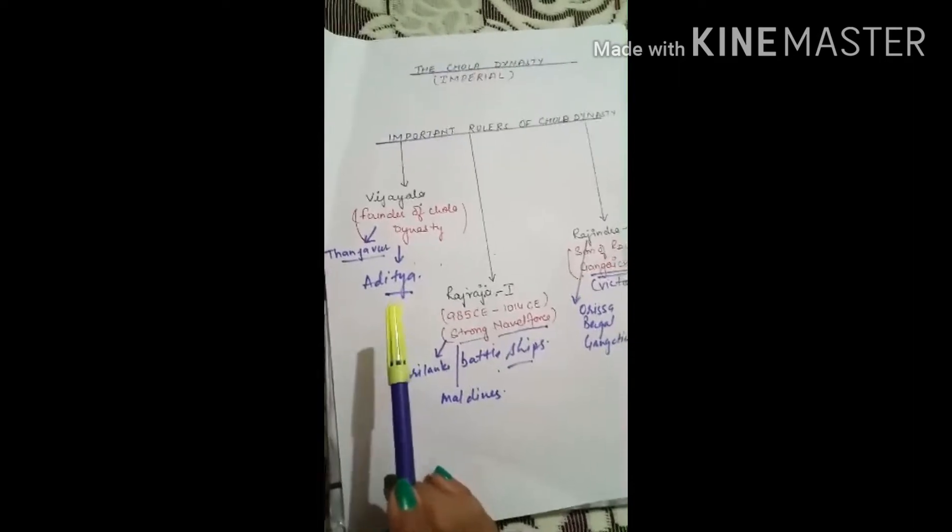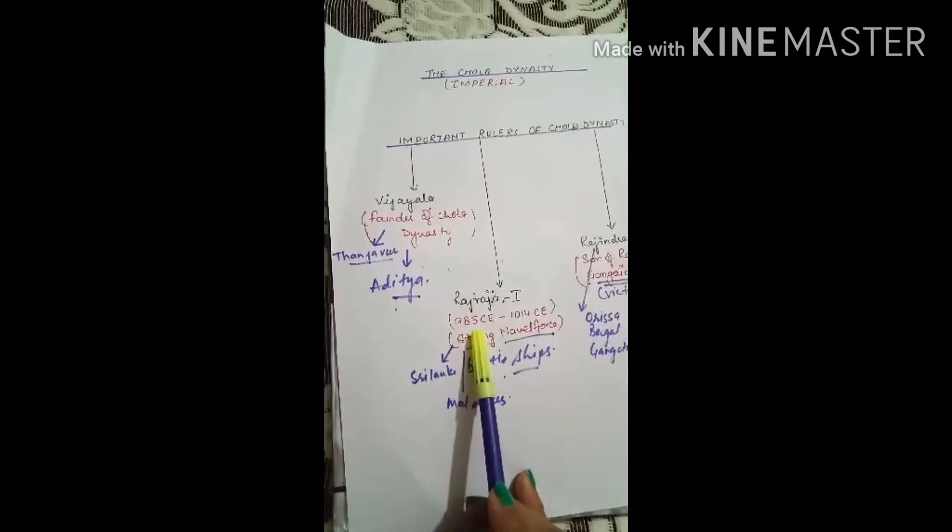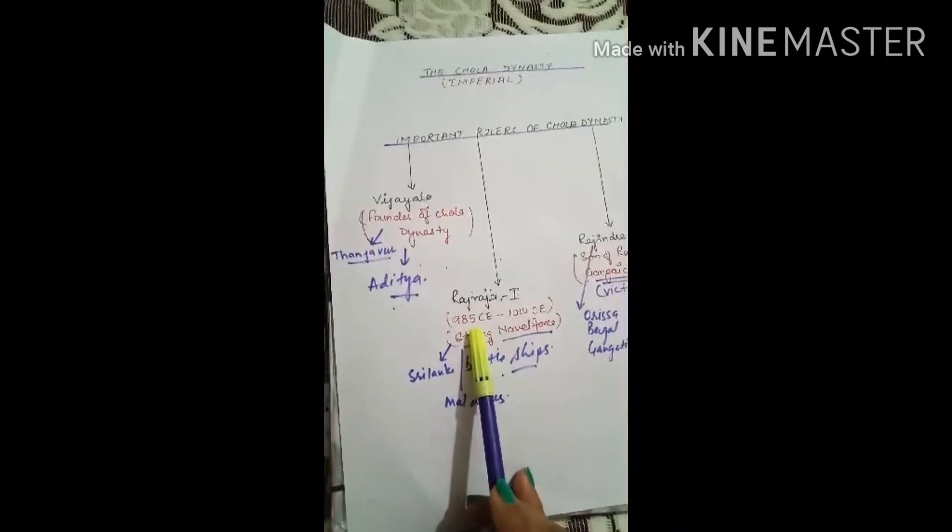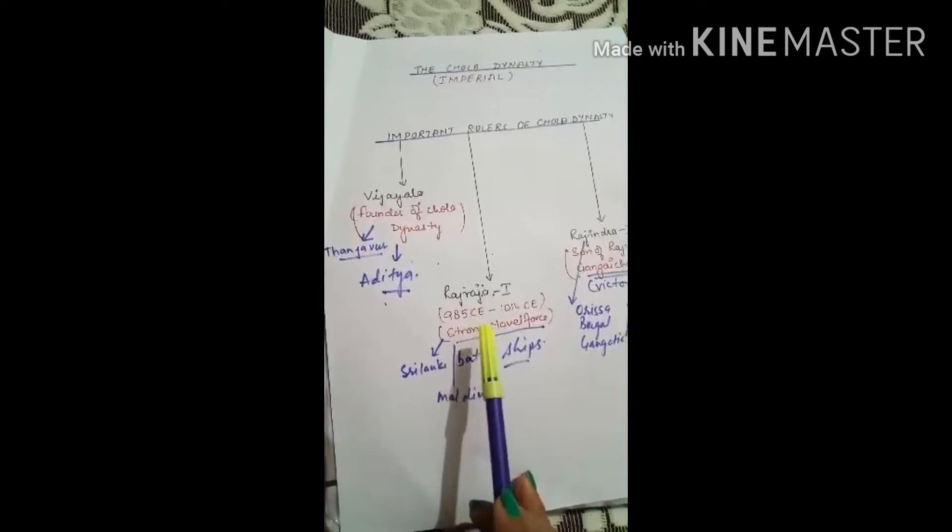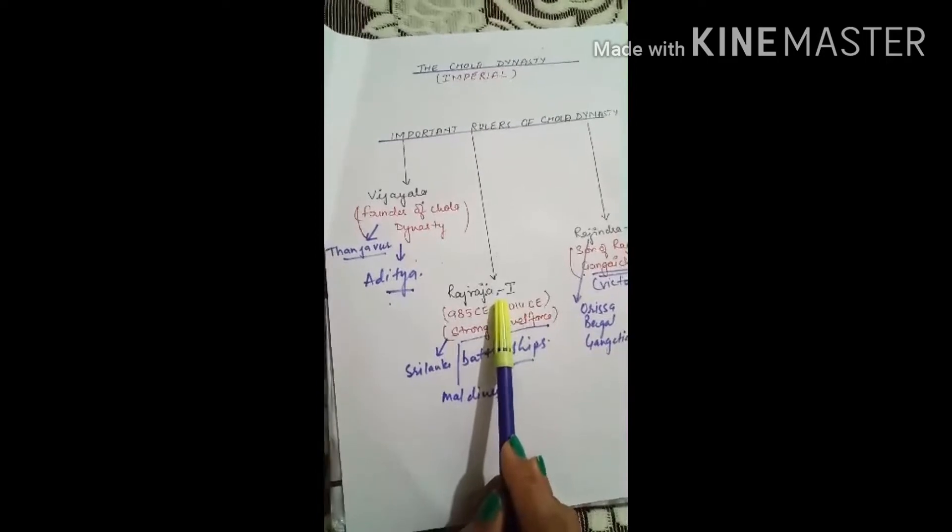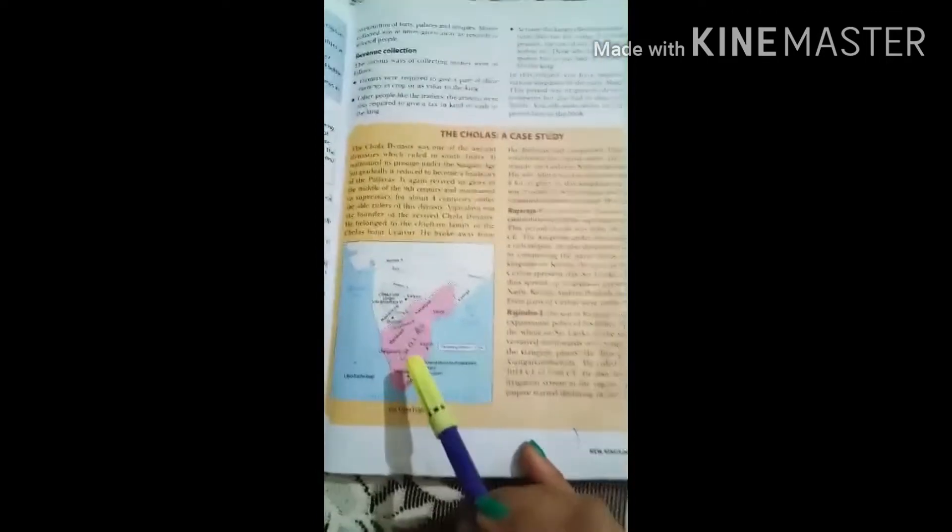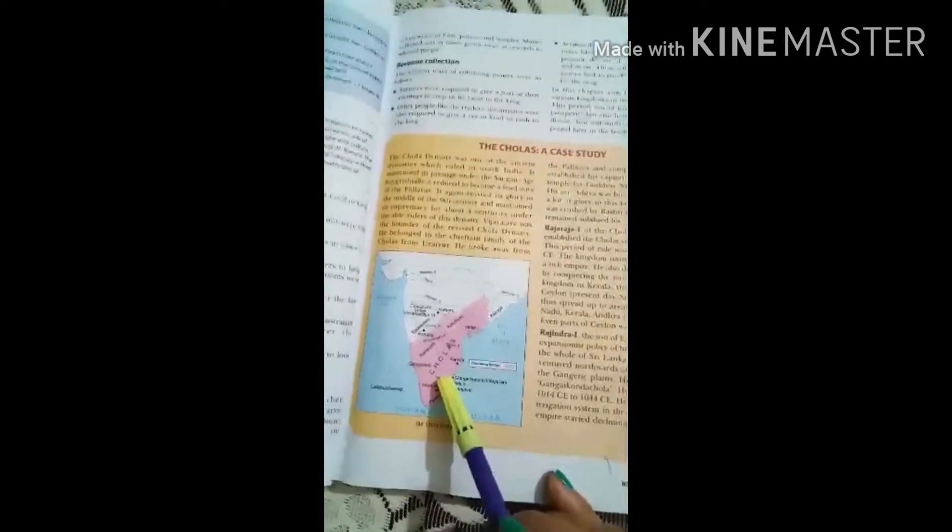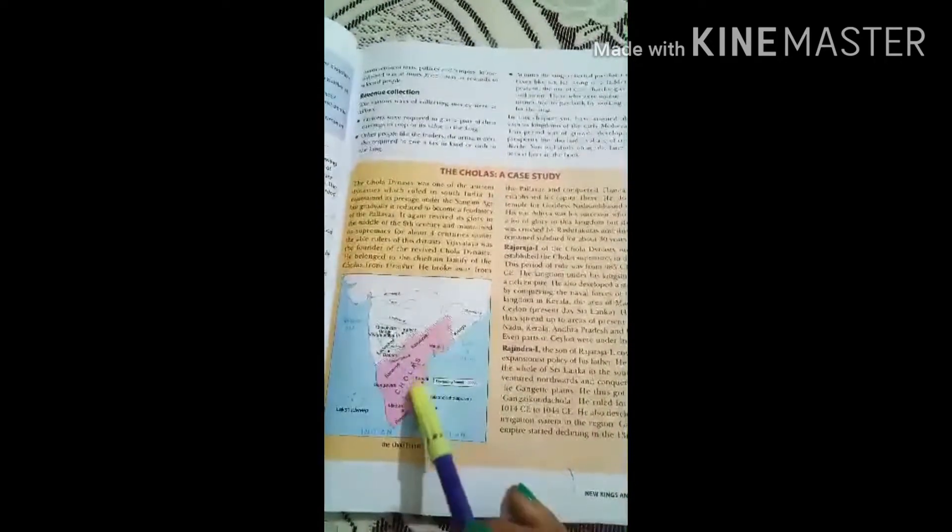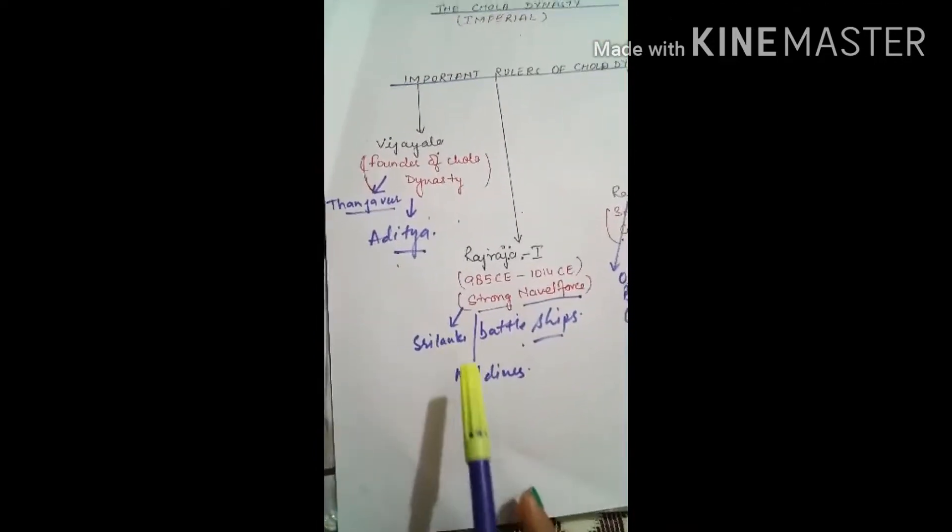In the year 985, we saw the greatest king of Chola dynasty who ascended the throne, and he was Raj Raja first. He conquered the parts of south, you can see here in the map south, and along with this southern part he conquered parts of Sri Lanka and Maldives.